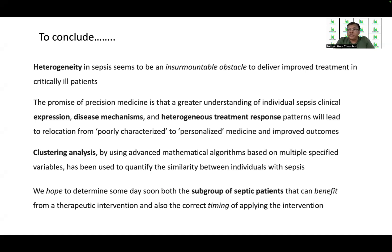Therefore, to conclude, heterogeneity in sepsis is an insurmountable obstacle to delivering appropriate or improved treatment. The promise of precision medicine comes with a rider that a greater understanding of individual sepsis clinical expression, disease mechanisms, and heterogeneous treatment response can lead to relocation from poorly characterized disease to personalized medicine — better characterized disease with improved outcomes. Clustering analysis, a means of machine learning using advanced mathematical algorithms based on multiple specified variables, has been used effectively to quantify the similarity between individuals with sepsis, and that is the stepping stone upon which all future research is based, followed by simulation. We hope someday we will be able to know the subgroup of septic patients that can benefit from a therapeutic intervention in even greater detail and apply the correct timing of that intervention so that we can conquer sepsis in a better way.